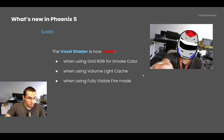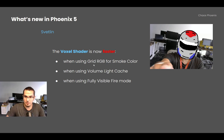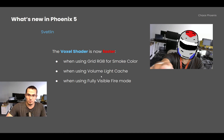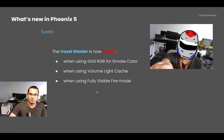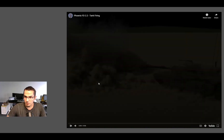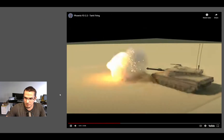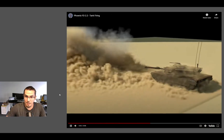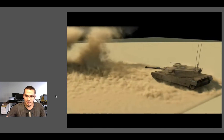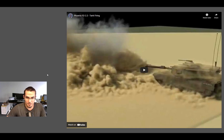The voxel shader is now faster. Three cases were sped up: Grid RGB used for smoke color, when the volume-wide cache of Phoenix was enabled, and when the fully visible fire mode is used. An old scene from 2014 that uses all three of these is now 30% faster.